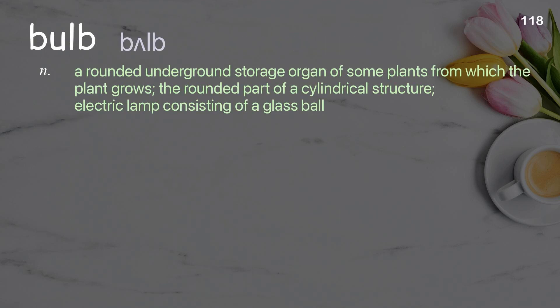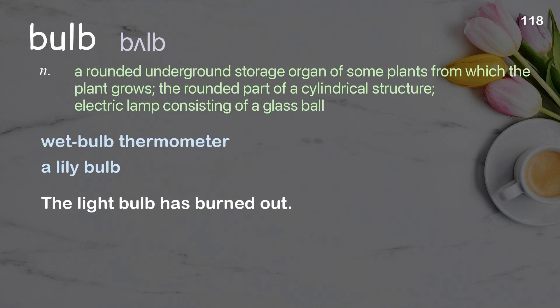Bulb: a rounded underground storage organ of some plants from which the plant grows; the rounded part of a cylindrical structure; an electric lamp consisting of a glass ball. Examples: wet bulb thermometer, a lily bulb. The light bulb has burned out.